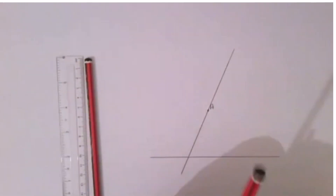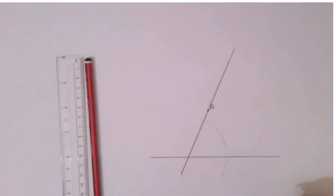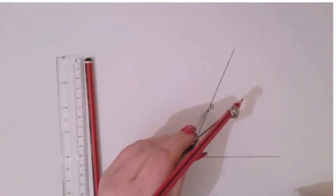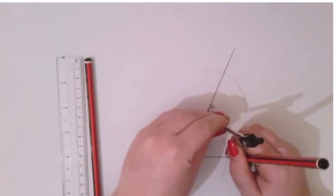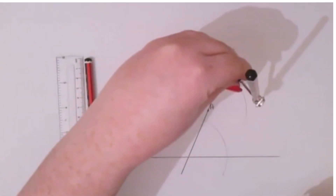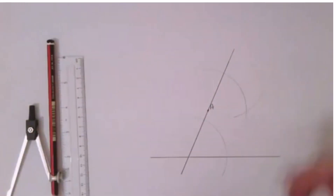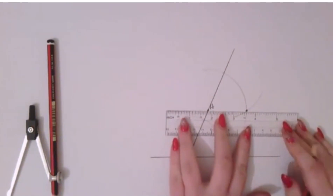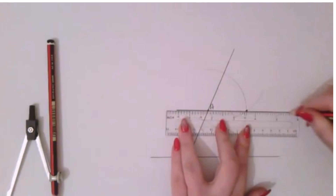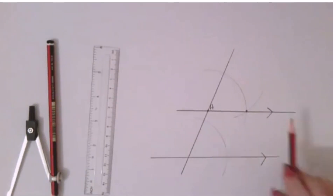We then take our compass and we draw an arc across both of these lines. We then place our compass on our point A and draw another arc. We then measure the width of our lower arc and moving our compass to our upper arc we draw an intersecting arc across the one that was already there. We are going to mark this point of intersection and using a straight edge we are going to join this to A. And as we can see we now have a parallel line to our given line passing through A.